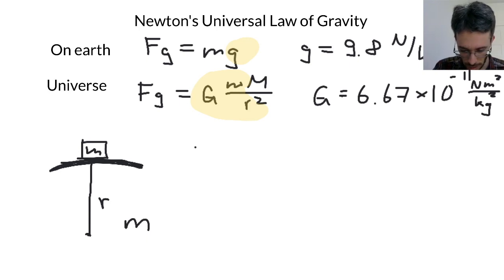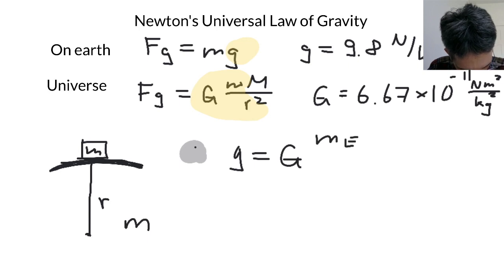So my hypothesis here, and we're going to test it, is that g is equal to capital G times mass of the Earth over the radius of the Earth squared. So let's look up some numbers.